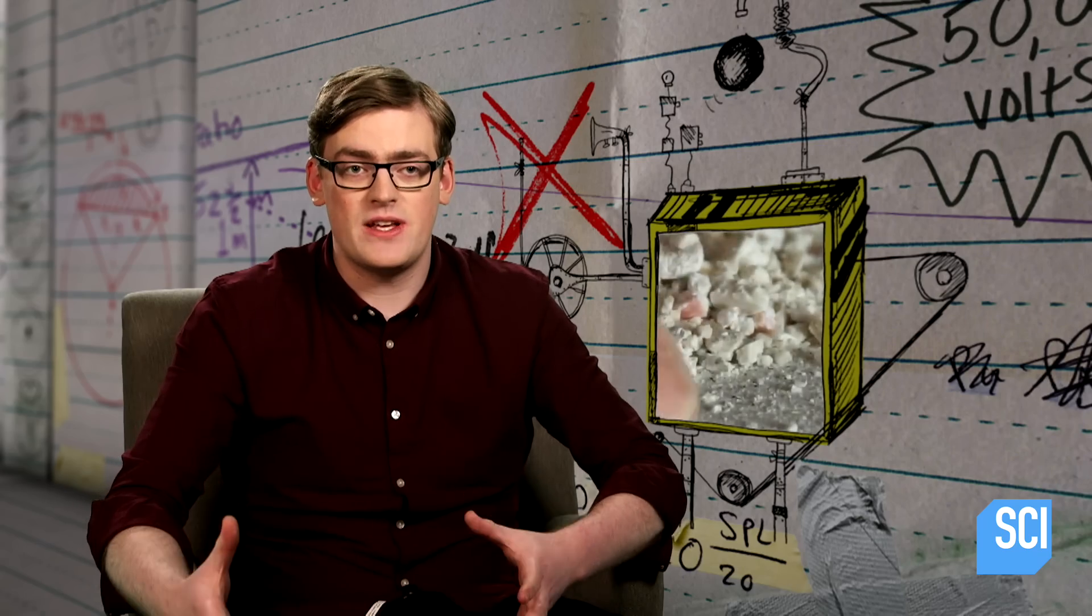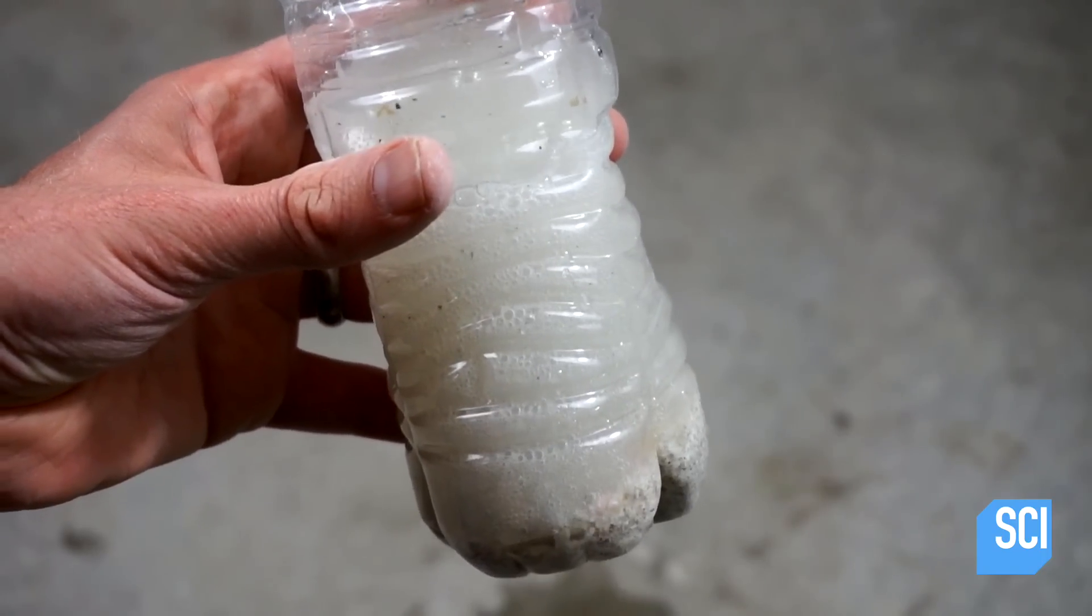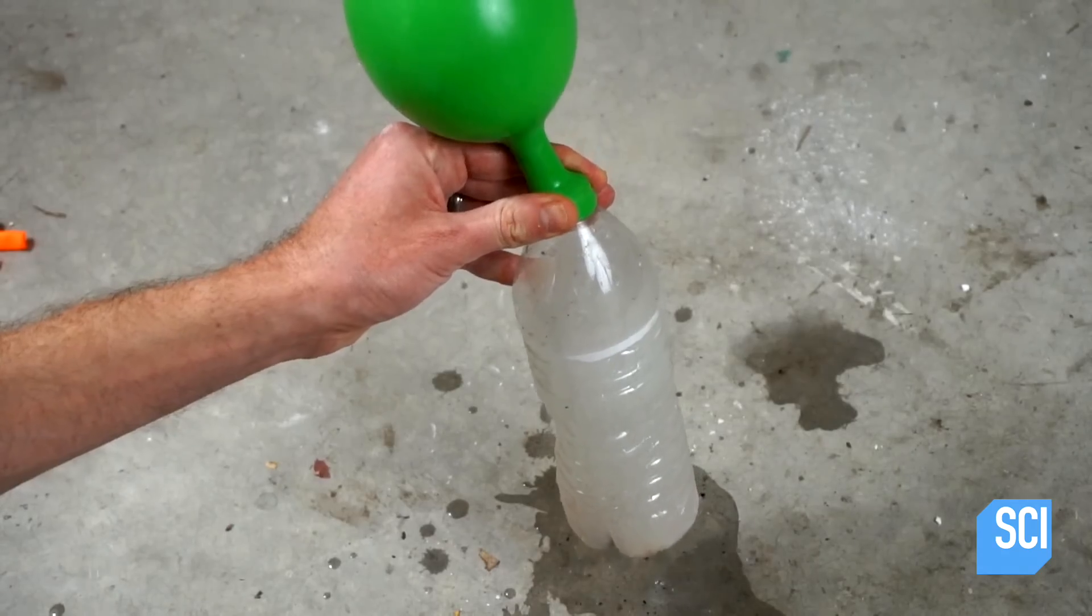Calcium carbonate in the shells can react with acetic acid in the vinegar to create carbon dioxide. By crushing them, he's increased their surface area so the reaction happens quicker. And this releases carbon dioxide, which is what inflates the balloon.